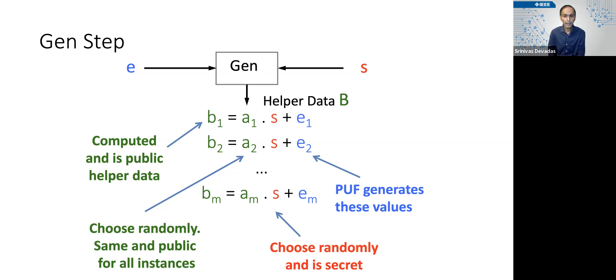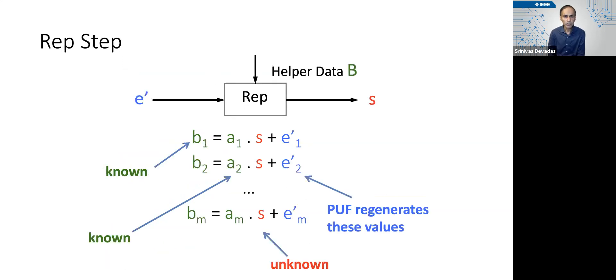And so the b's are going to be different as well. They're going to be chip-specific, and we're going to essentially generate the public data, helper data associated with the bᵢs or the capital B from the previous slide after choosing a secret by computing a₁s + e₁, a₂s + e₂, et cetera. So that's a generate step, pretty straightforward.